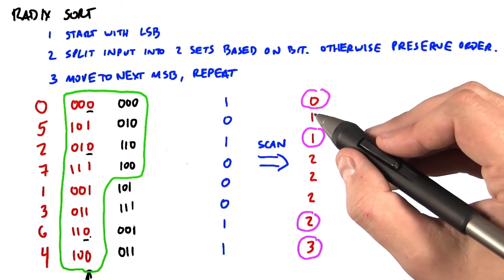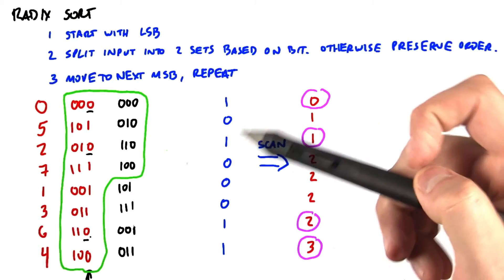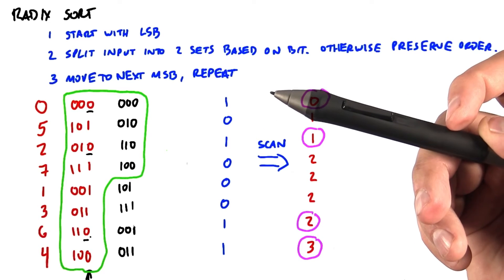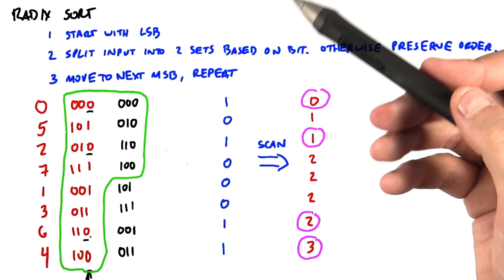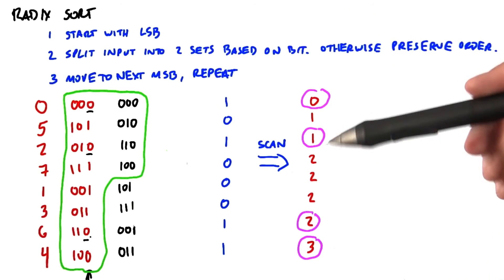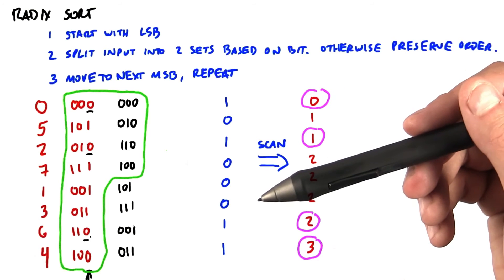There are a number of interesting ways to make this faster, and the most common one is to reduce the total number of passes by taking multiple bits per pass. 4 bits per pass and a resulting 16-way split instead of our 2-way split here appears to be fairly common.